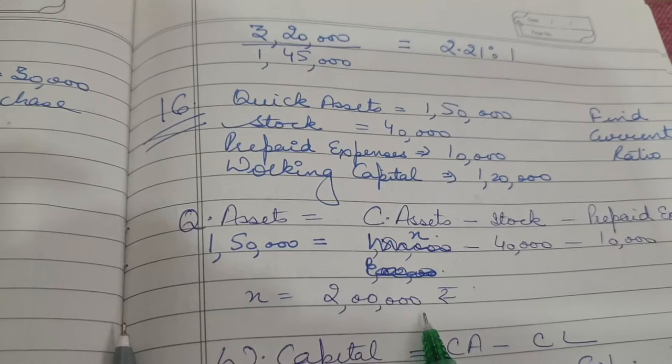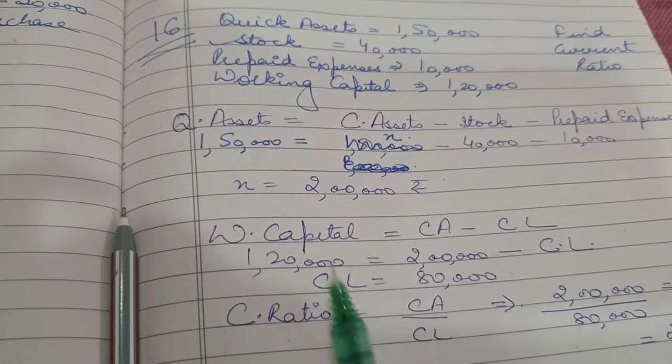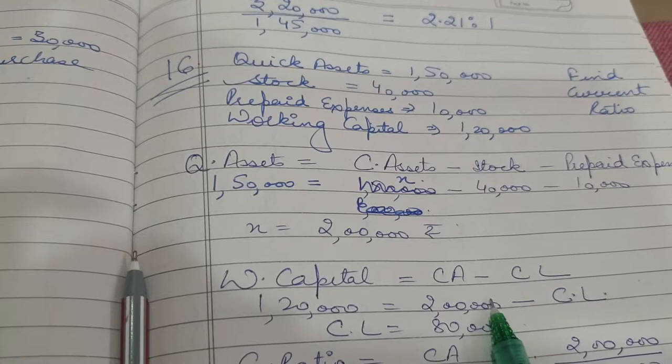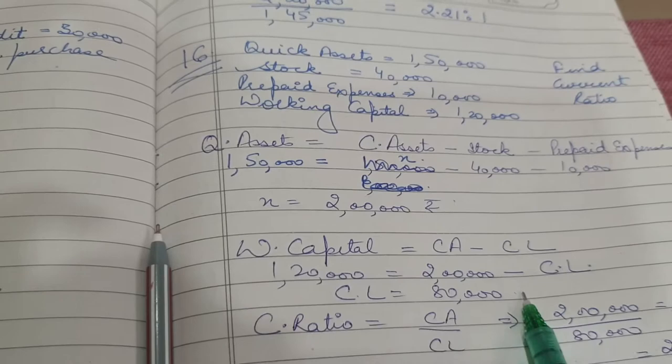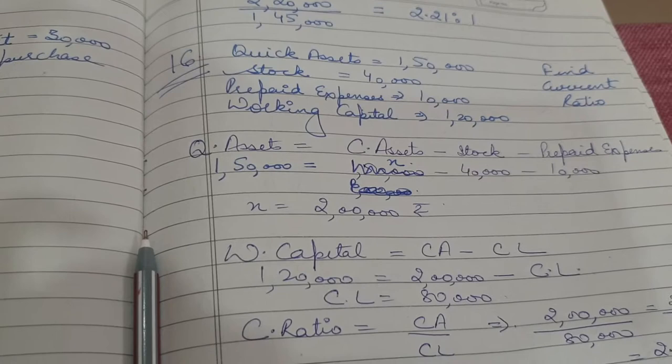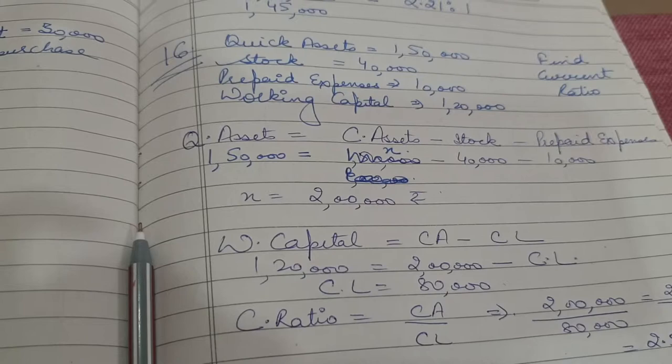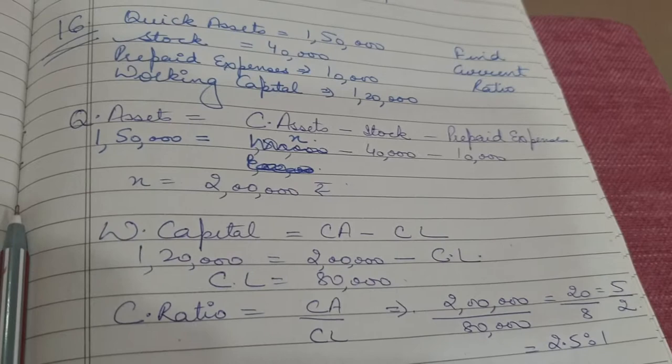Now using the working capital formula: working capital = current assets − current liabilities. So 1,20,000 = 2,00,000 − CL, giving current liabilities = Rs. 80,000. Now finding current ratio: current ratio = CA / CL = 2,00,000 / 80,000 = 2.5:1.